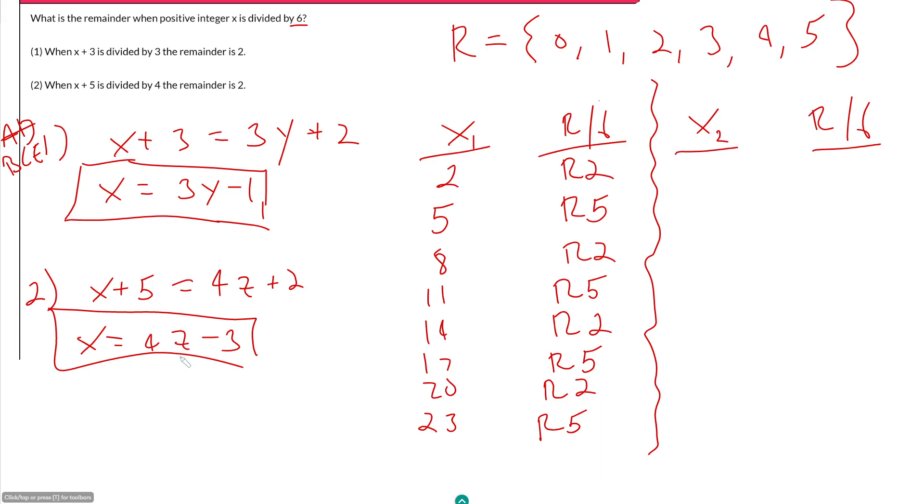So when z is equal to 1, x is equal to 1. But when z is equal to 2, 4 times 2 is 8 minus 3, so x would be equal to 5. So we're going up by 4 each time: 1, 5, 9, 13, 17, 21, 25, 29.